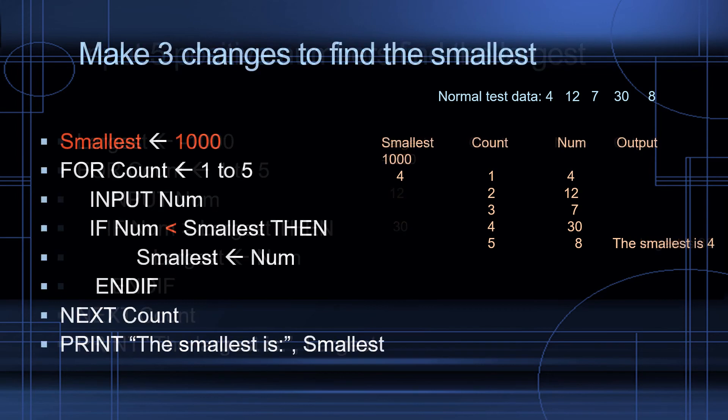Sometimes you might get a question, says, make three changes to find the smallest. So in our previous example, finding the largest, we had a variable called largest, and we initialized it to a very small number. We're going to do the opposite. We're going to make the variable called smallest and initialize it to a large number. Now we have our for loop for count runs from 1 to 5. Input the number. If the number is smaller than what's stored in smallest, then assign that number to smallest. And if next count, this will allow the loop to repeat five times. After we've repeated five times, we've input the numbers. We've checked if they're smaller than smallest. We're going to print the smallest is smallest.